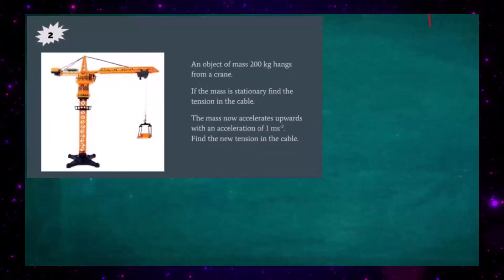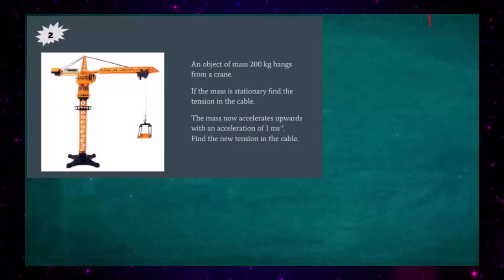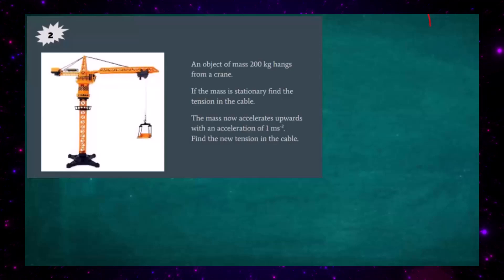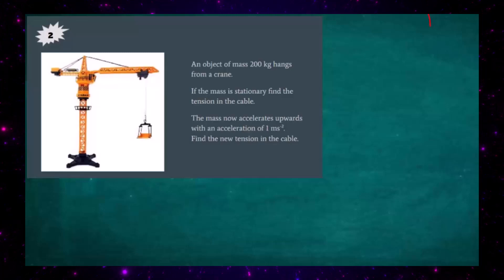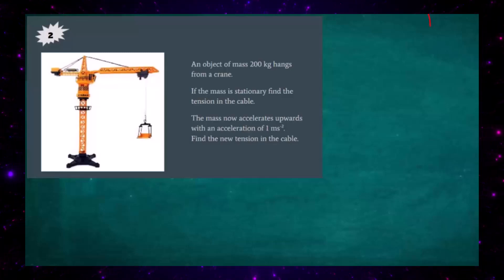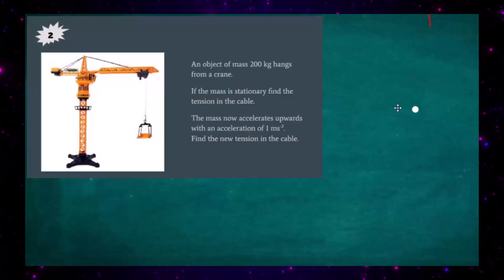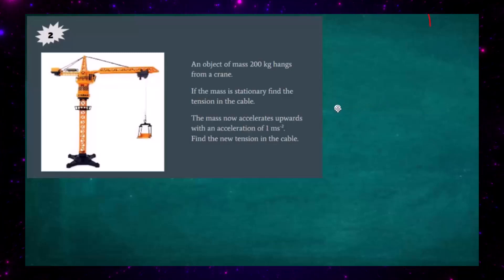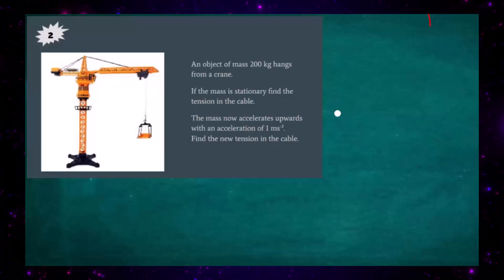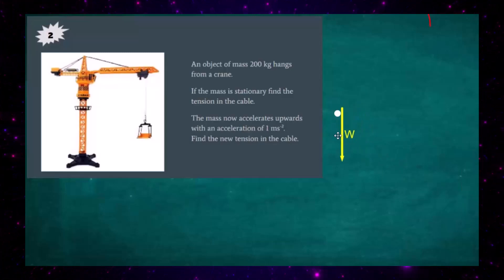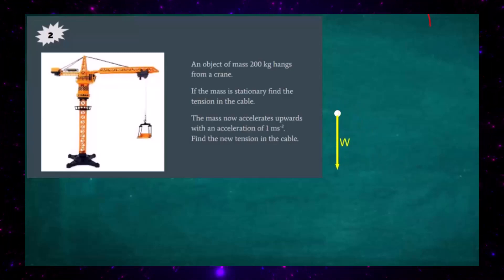Question 2: an object of mass 200 kilograms hangs from a crane. If the mass is stationary, find the tension in the cable. The mass then accelerates upwards at one meter per second squared, and we have to find the new tension in the cable. To do this we rely on a free body diagram, which shows the forces acting on the object. Since the object is stationary, we draw in the weight acting downwards.